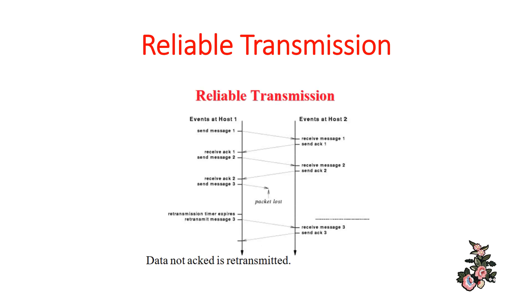Host one sends message one; it has to reach the receiver, that is host two. As soon as the information reaches host two, it sends an acknowledgement back to the sender, host one. Host one then sends the next message. When a packet is lost during transmission, the retransmission timer expires, a retransmit message is generated, and host one sends message three again. Host two sends acknowledgement three back to host one.